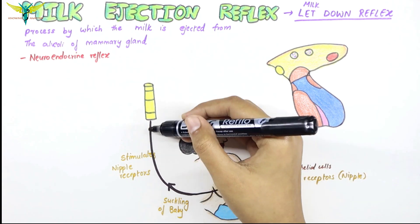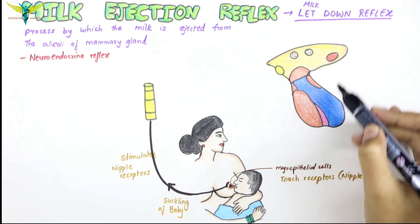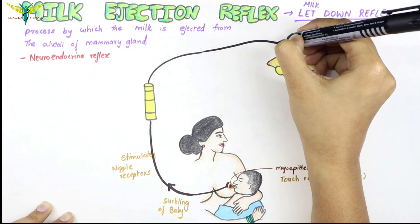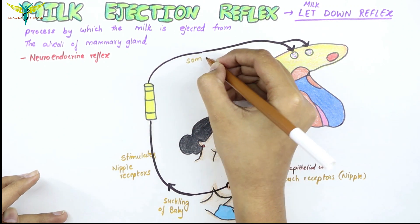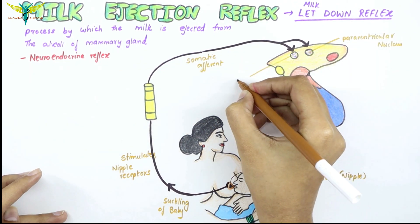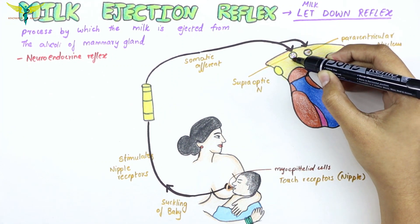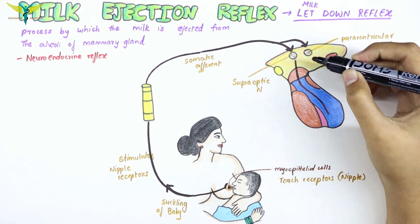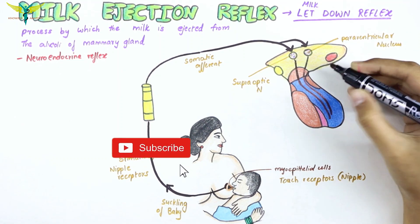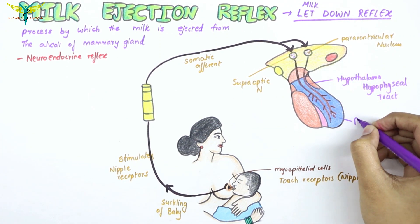The impulses discharged from the touch receptors are carried by the somatic afferent nerve fibers to the paraventricular and the supraoptic nuclei of the hypothalamus. The hypothalamus in turn sends signals to the posterior pituitary through the hypothalamo-hypophyseal tract.